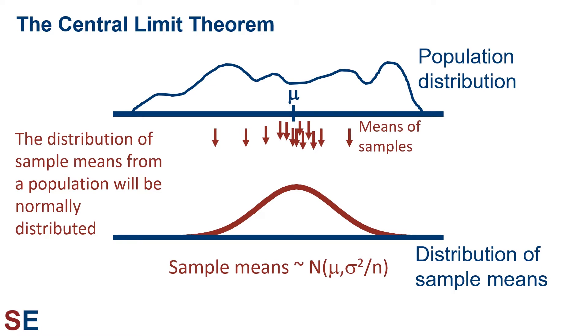The more variance in the population, the wider the distribution of sample means. The more values in each sample, the more narrow the distribution of sample means.